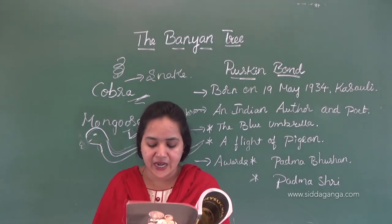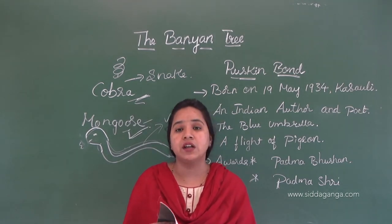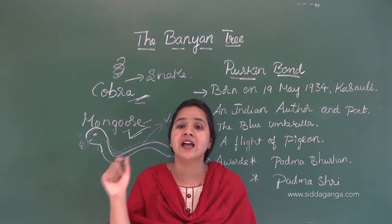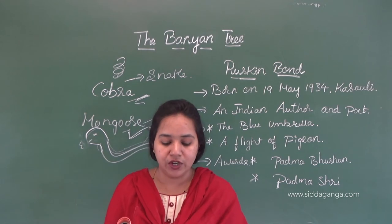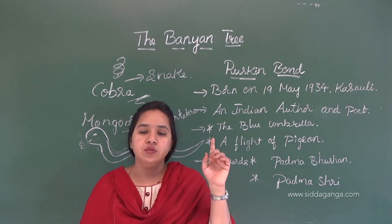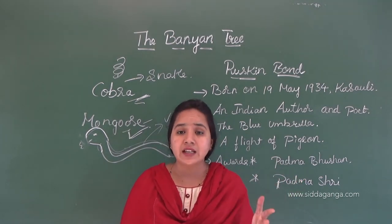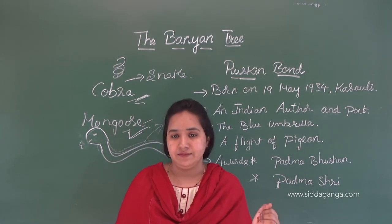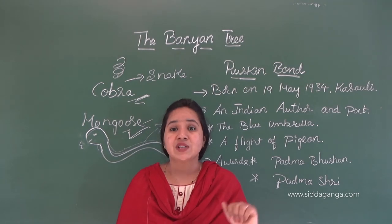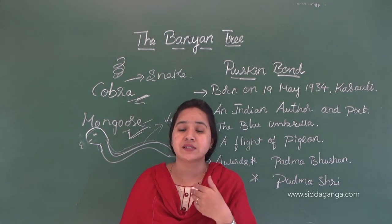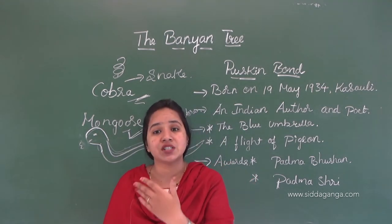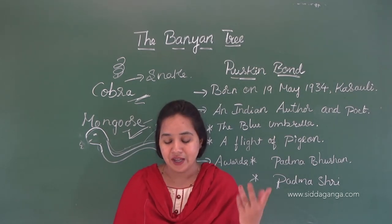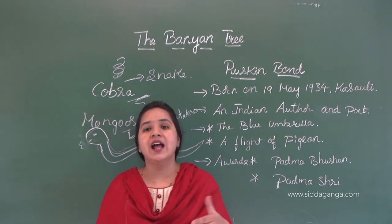The squirrel was very young and had its own friends and relatives. Those friends and relatives probably thought it foolish and headstrong for trusting a human. The writer imagined that when the squirrel became his friend, the squirrel's friends and relatives would call it foolish because it had become friends with a human being.